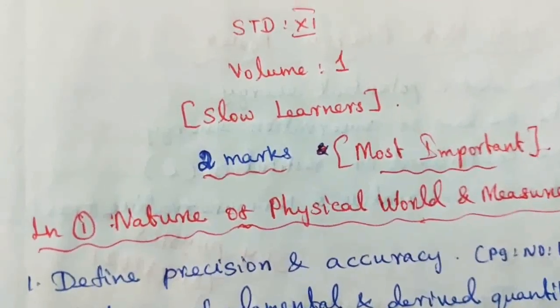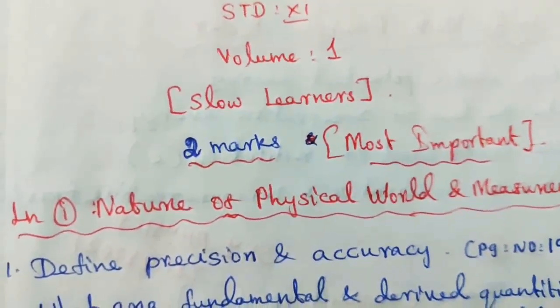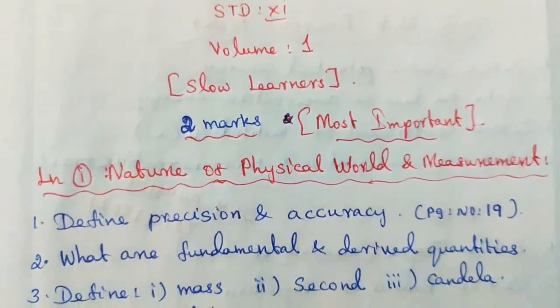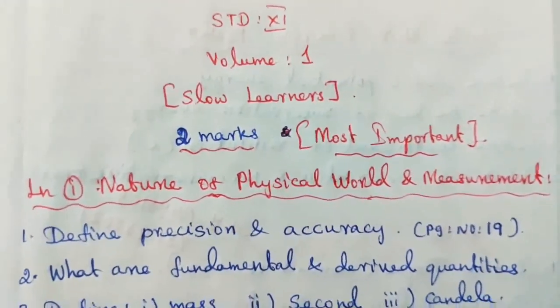Standard 11, Volume 1 for Slow Learners. 2 marks important questions. Lesson 1: Nature of Physical World and Measurement.